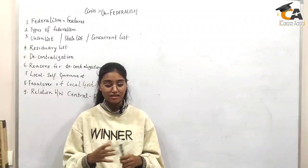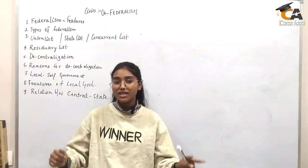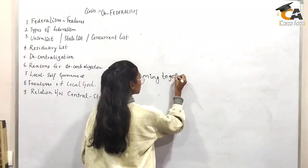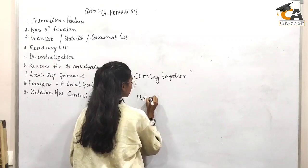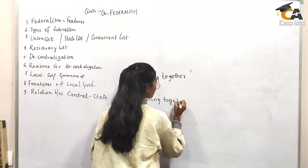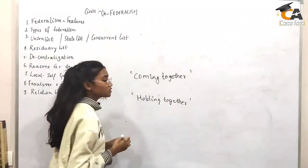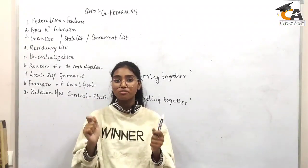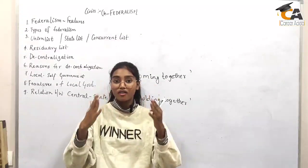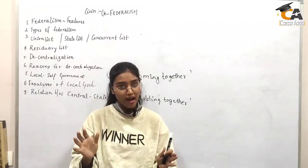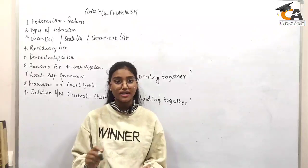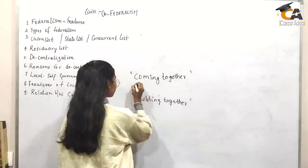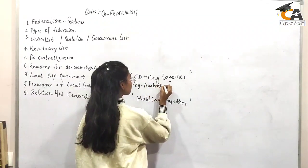Moving forward with types of federalism. There are two types: coming together federation and holding together federation. In coming together federation, small states unite and work together as a government. The central government holds the highest authority, and it is largely irrespective of the state level — the main function is at the central level. Examples of coming together federation are Australia and USA.